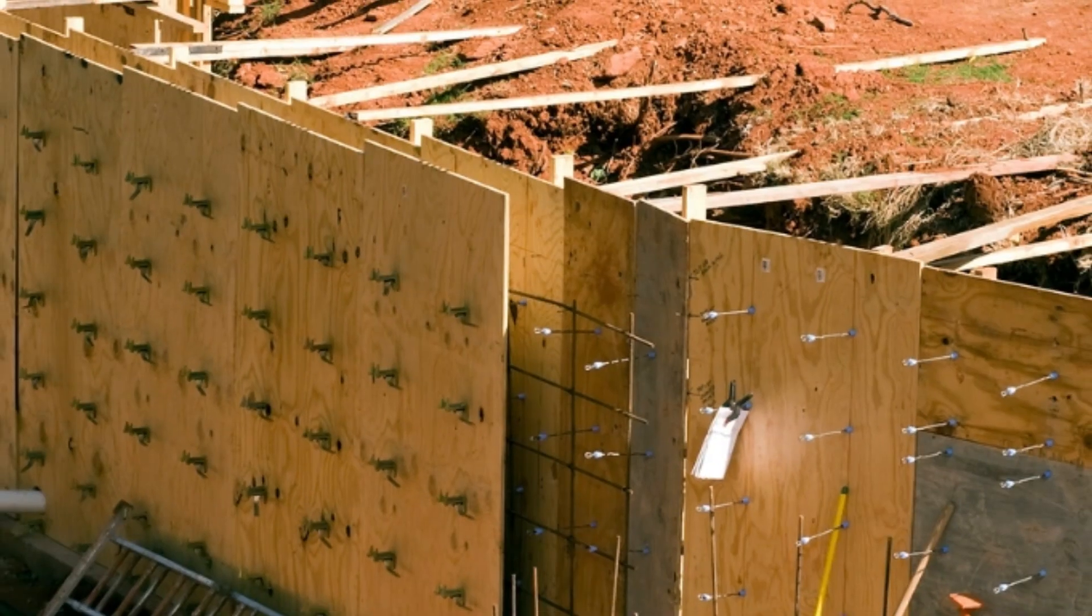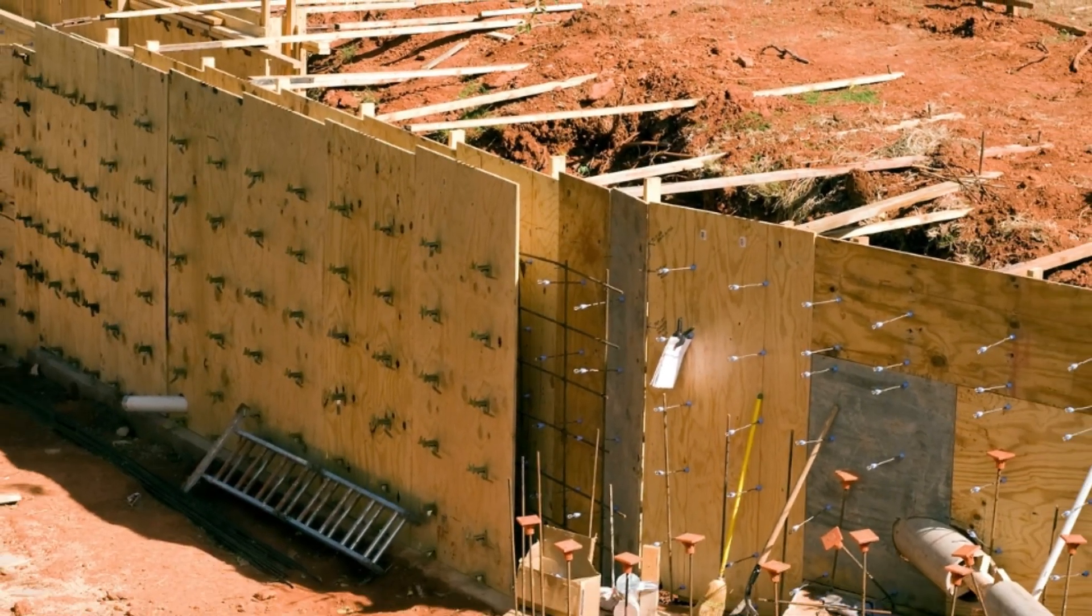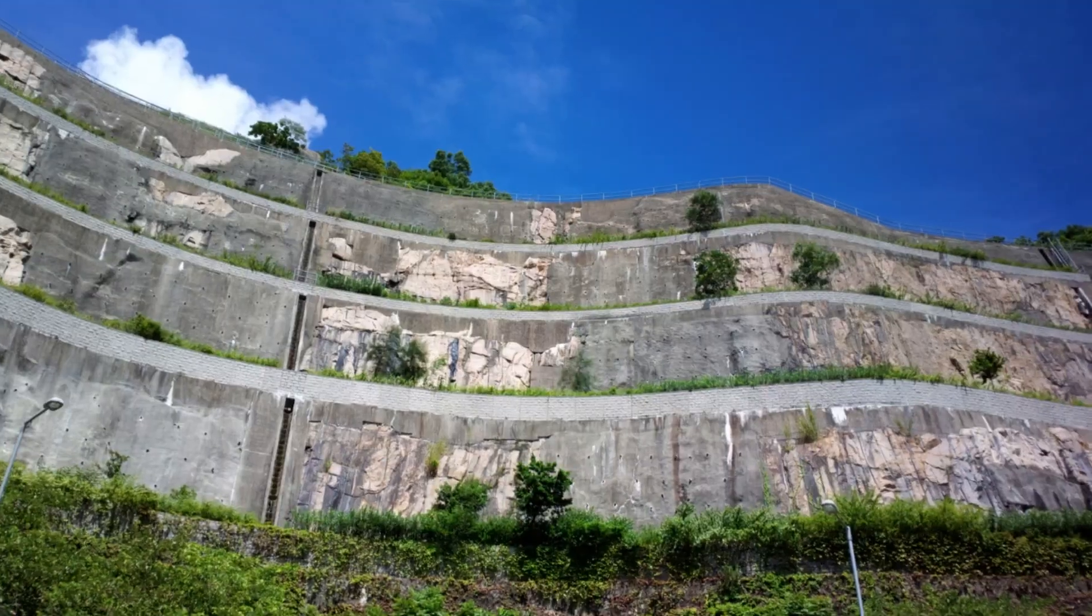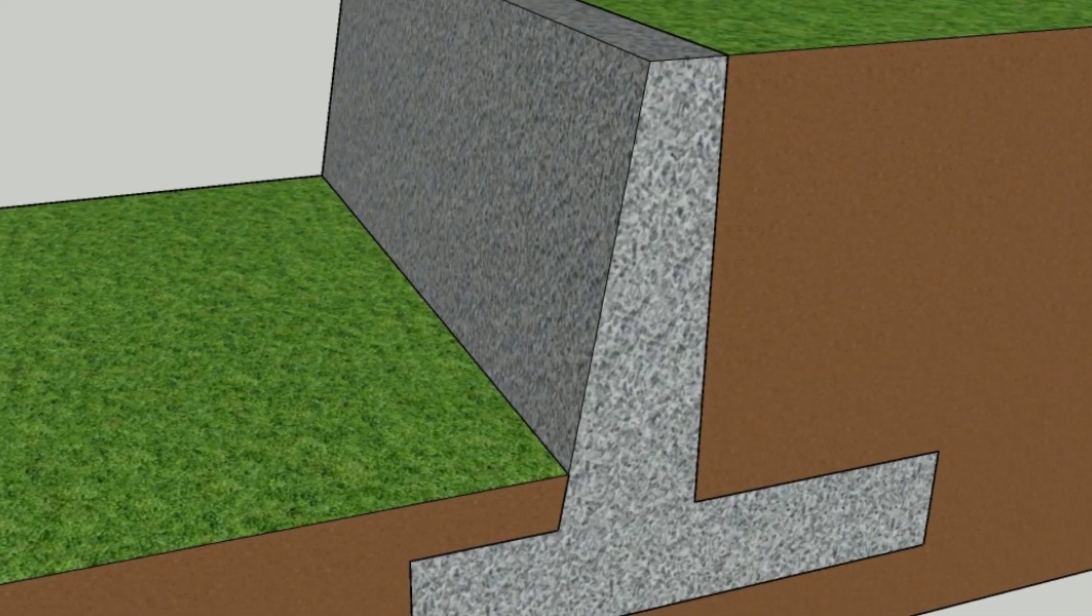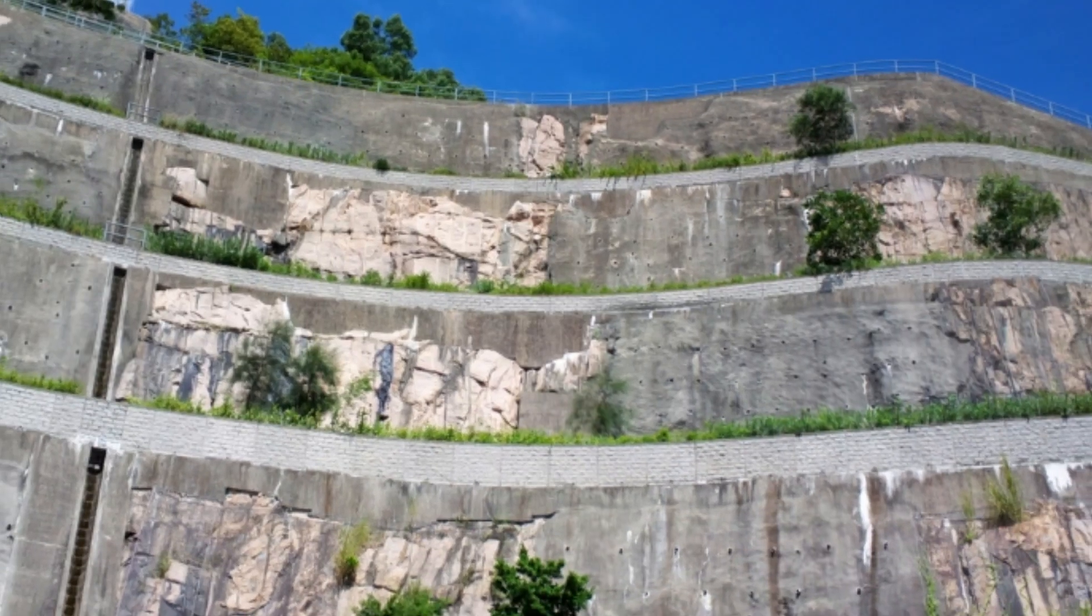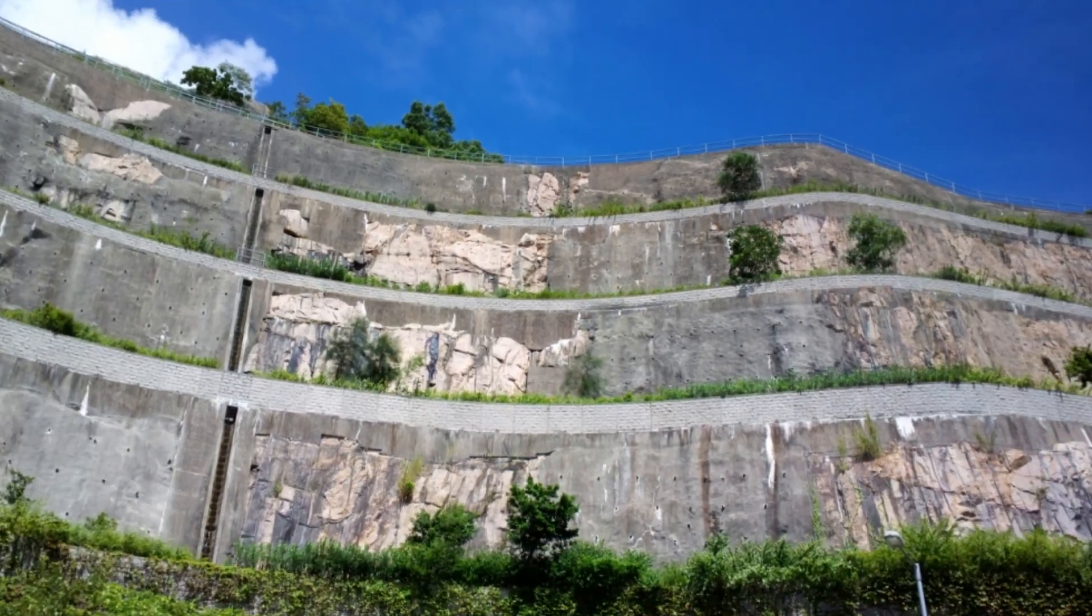A retaining wall is a structure that's designed and constructed to resist the lateral pressure of soil which may be caused by natural or man-made slopes. It's usually used to hold back or retain soil and prevent erosion in areas where there is a significant difference in elevation or terrain.